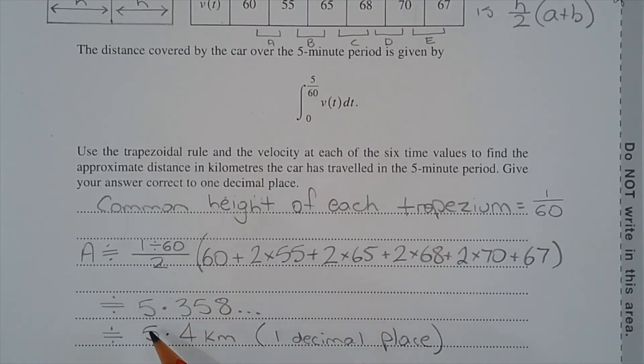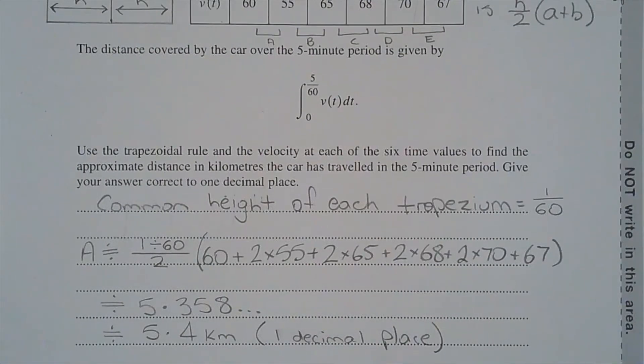And that's approximately equal to 5.358, and rounded to one decimal place, that's approximately equal to 5.4 kilometers correct to one decimal place.